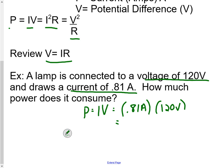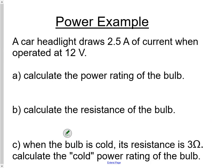Let's try another one. We have a car with a headlight that draws 2.5 amps of current when it's operating at 12 volts. First, I want you to calculate the power rating of the bulb. What would be ideal is for you to pause the video right now, try all the problems, and then turn it back on and see how you did.